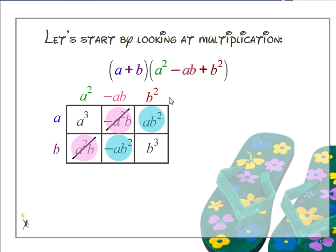Our second set of matching terms, ab squared and negative ab squared, they're going to cancel each other out too. And all I'm left with are these two terms, a to the third power and b to the third power. Also known as a cubed and b cubed.